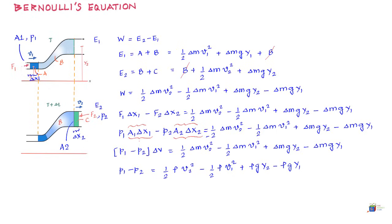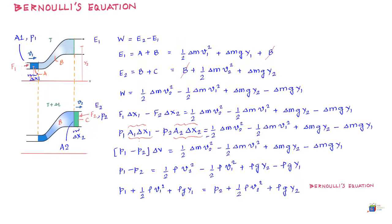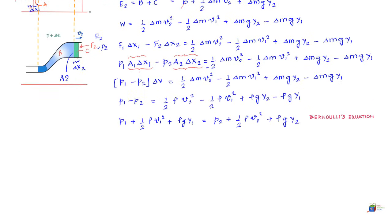Rearranging this equation by bringing all subscript-1 terms to the left-hand side and subscript-2 terms to the right-hand side gives Bernoulli's equation, which essentially says that if you sum up the kinetic energy per unit volume, the potential energy per unit volume, and the pressure at any point, it is a constant. Let us now try to interpret this equation in various ways.